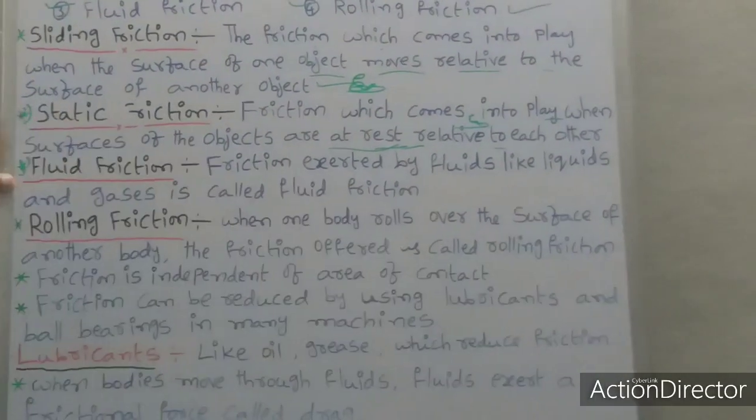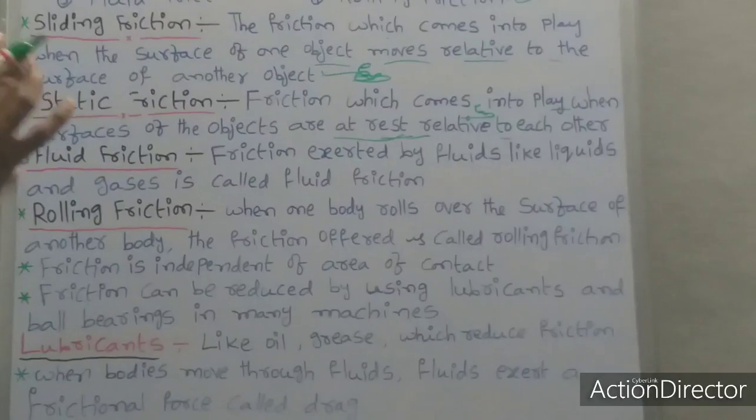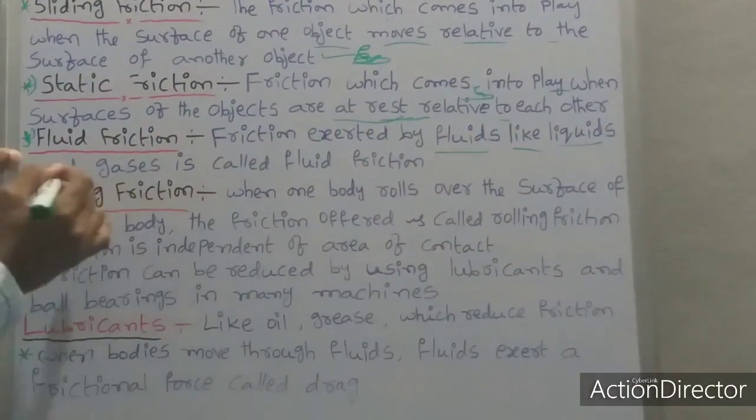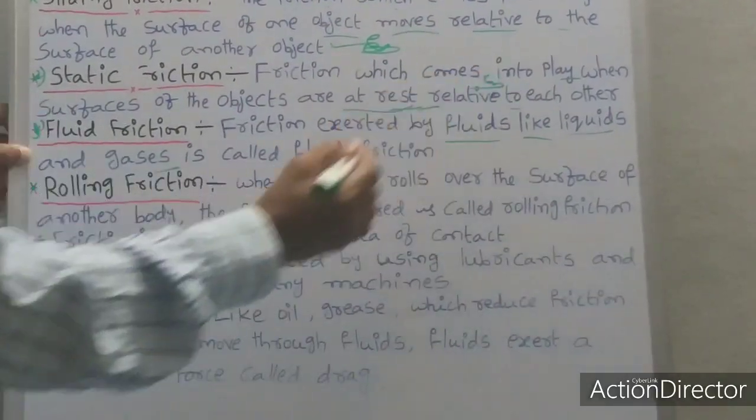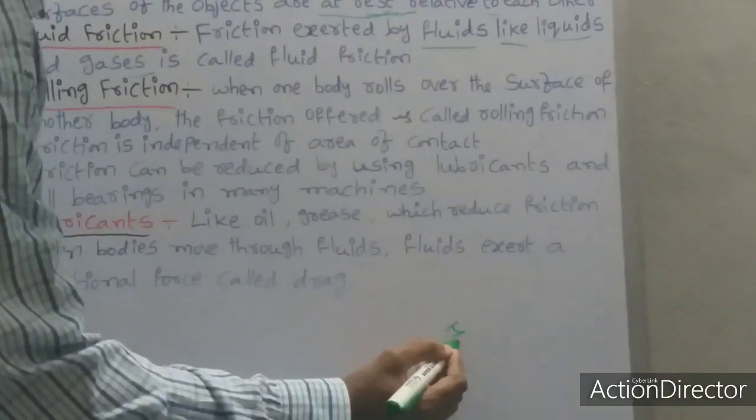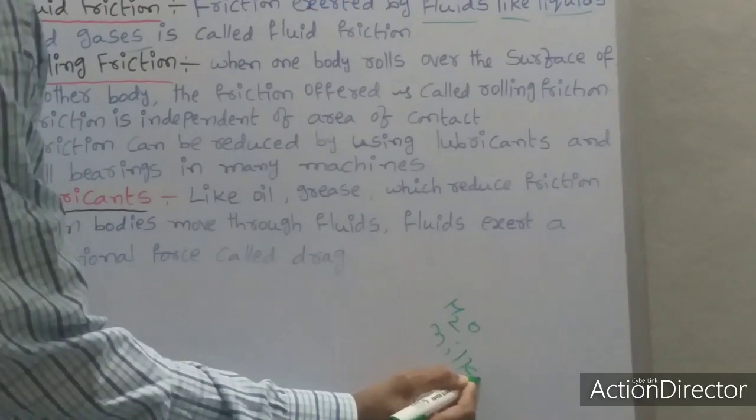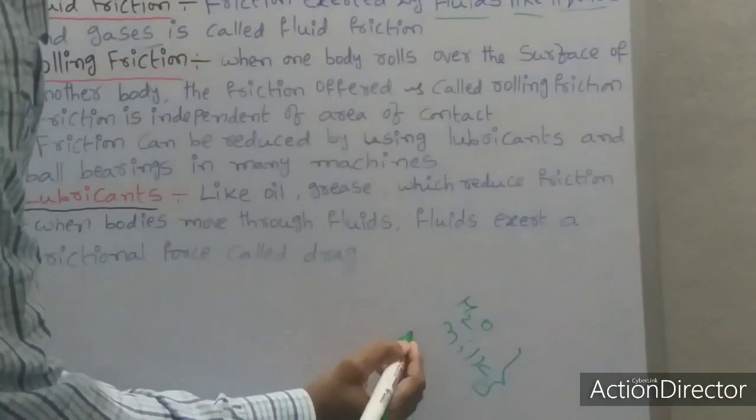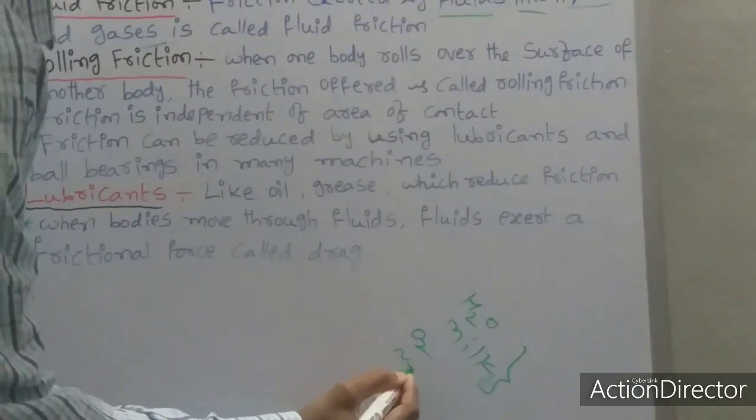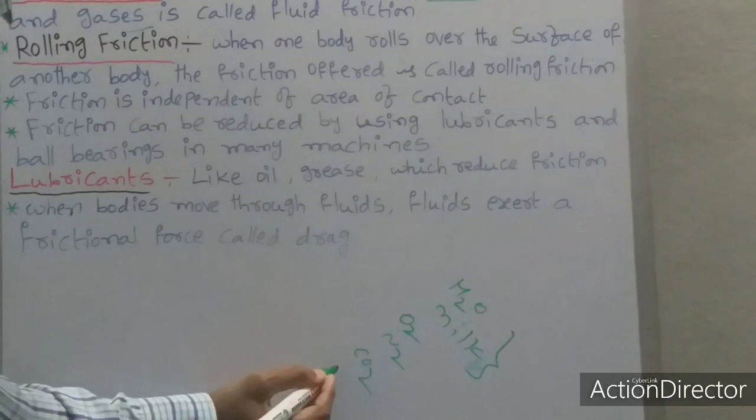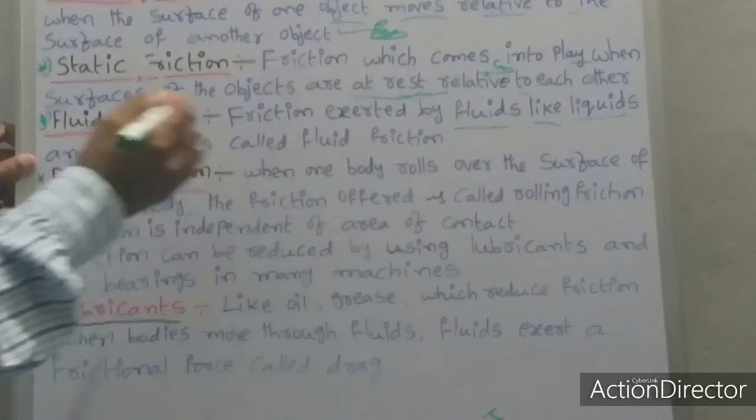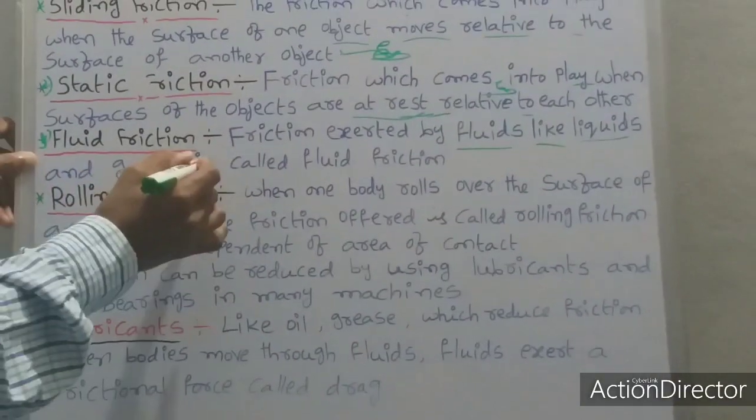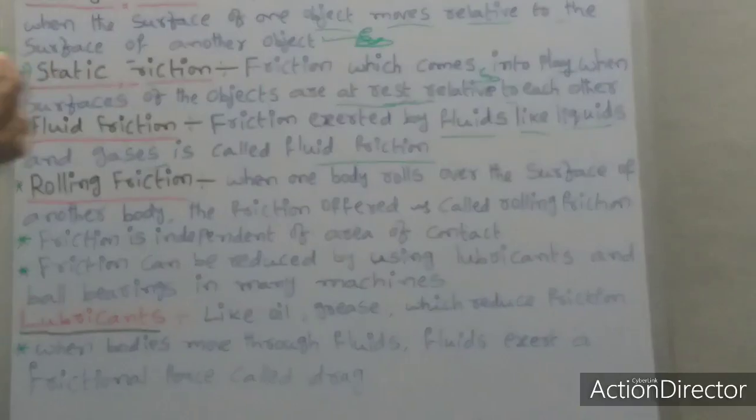Third one students, fluid friction. Friction exerted by fluids like liquids and gases is called fluid friction. Liquid examples students: water, milk, kerosene, petrol. Gases examples students: oxygen, nitrogen, carbon dioxide. Friction exerted by fluids like liquids and gases is called fluid friction.